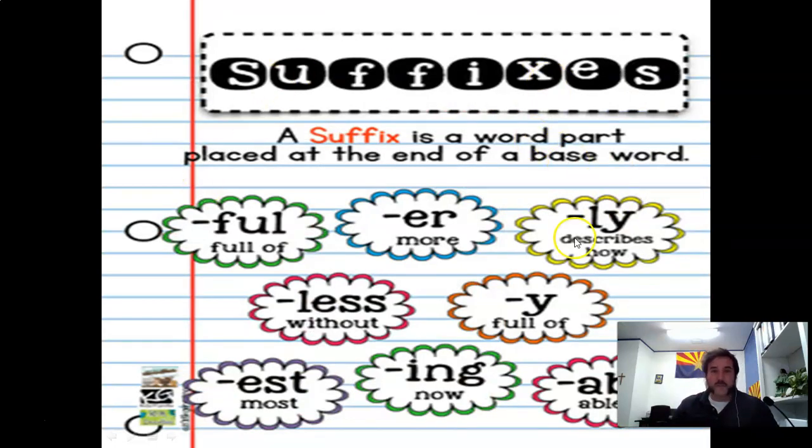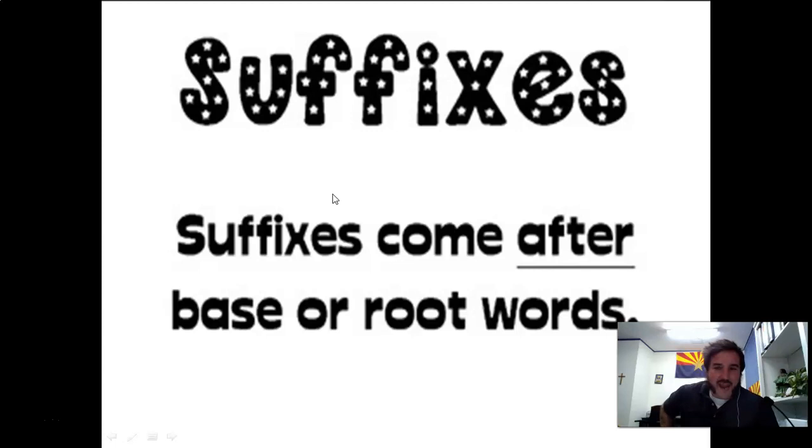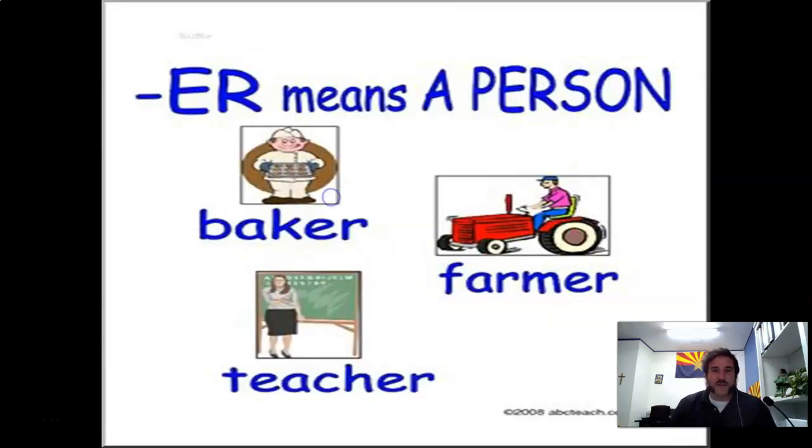There's lots of them, but again we're dealing with f-u-l, e-r, and l-y and you can see they each have certain meanings, but the biggest thing to remember is that suffixes come after the root word, kind of the opposite of last week.